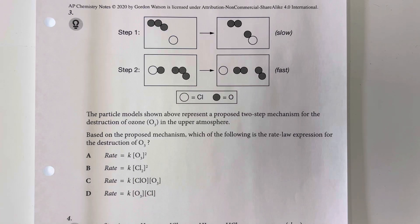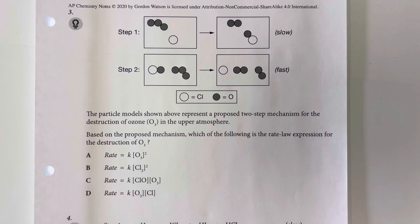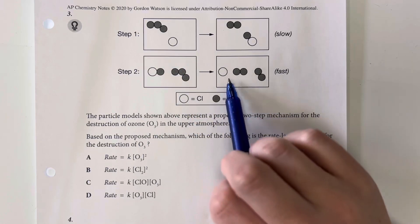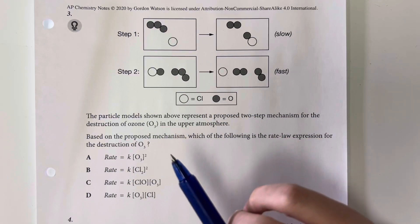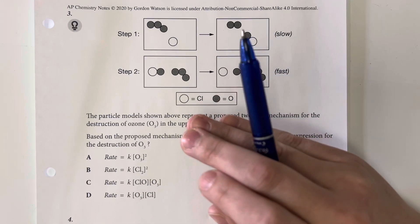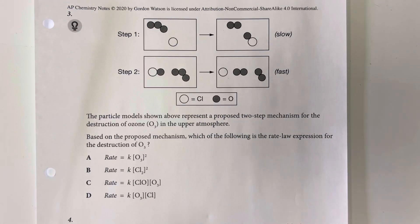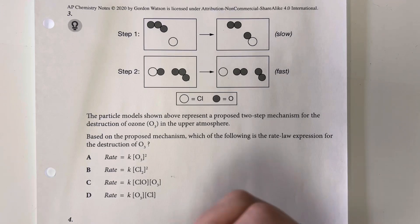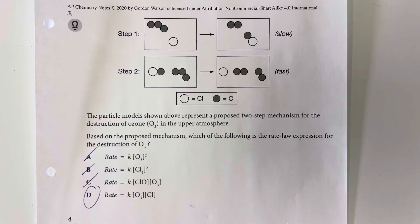A particle model represents a proposed two-step mechanism for the destruction of ozone in the upper atmosphere. Which of the following is the rate law expression for the destruction of ozone? Chlorine is going to be a catalyst. Normally we would eliminate something that appears on both sides, but since it is a catalyst it does increase the speed of the reaction, so the rate is affected by the amount of catalyst present. The overall reactants are chlorine and ozone, and both should be present, leaving us exclusively with option D.